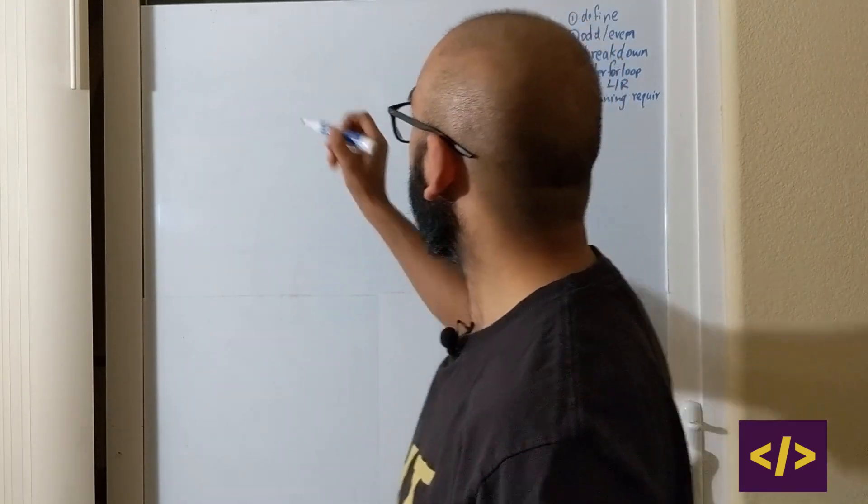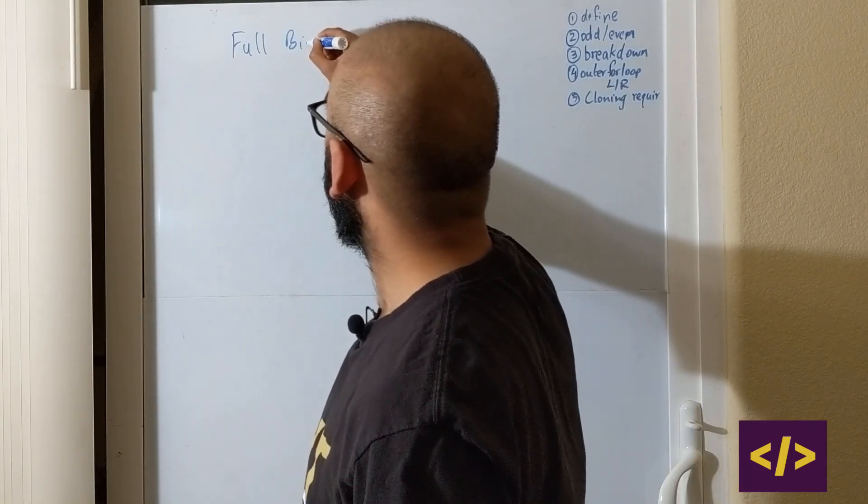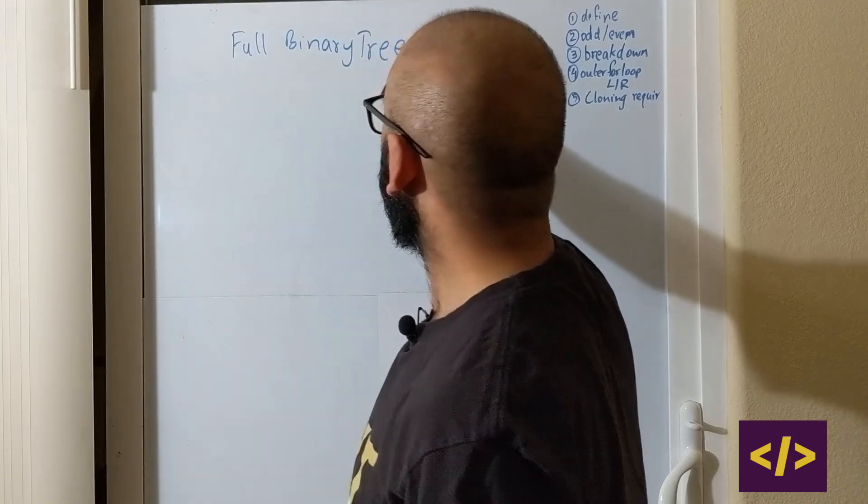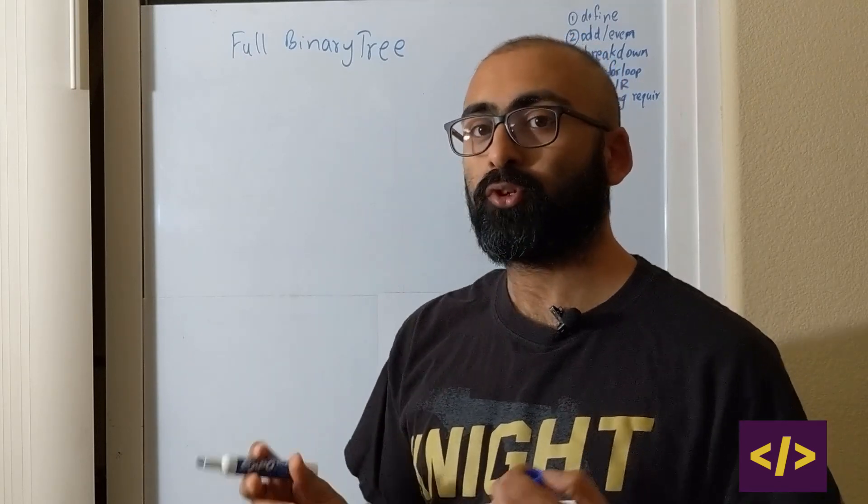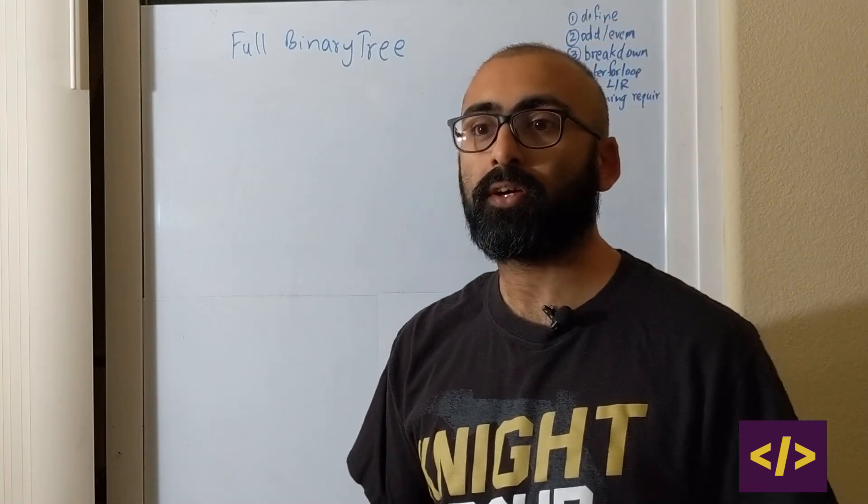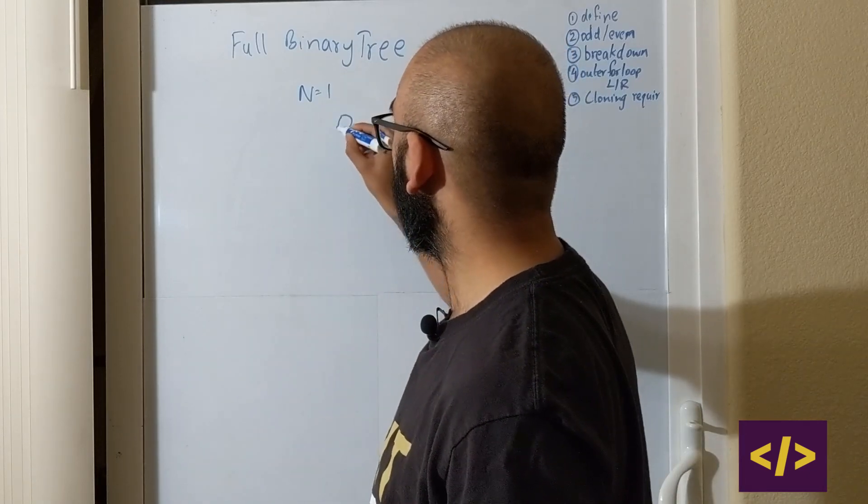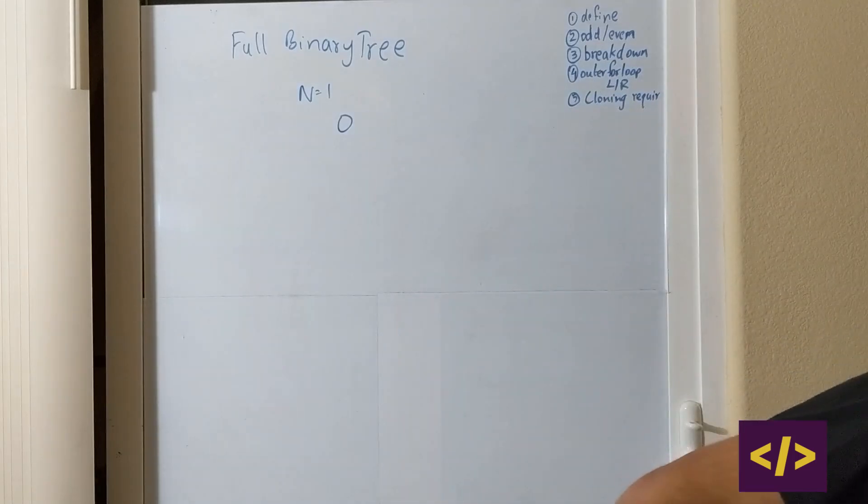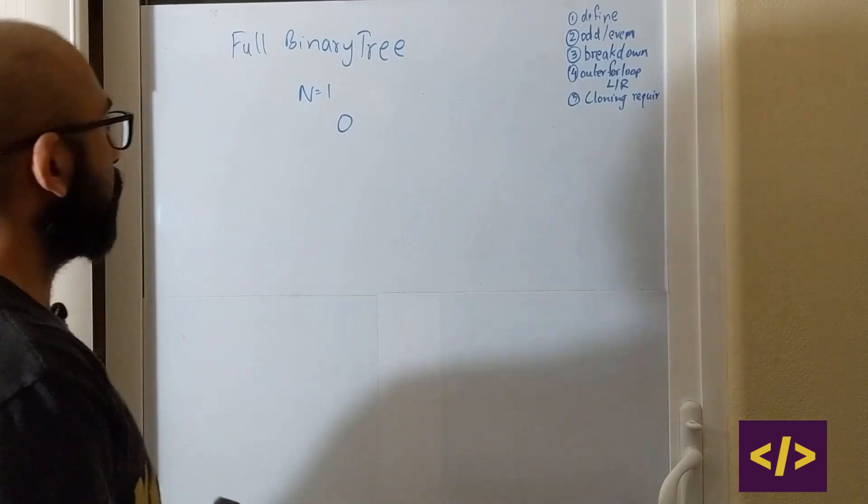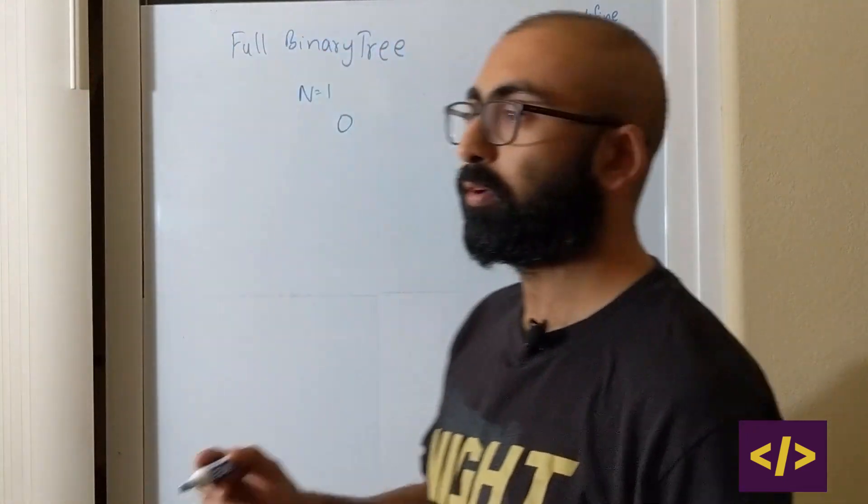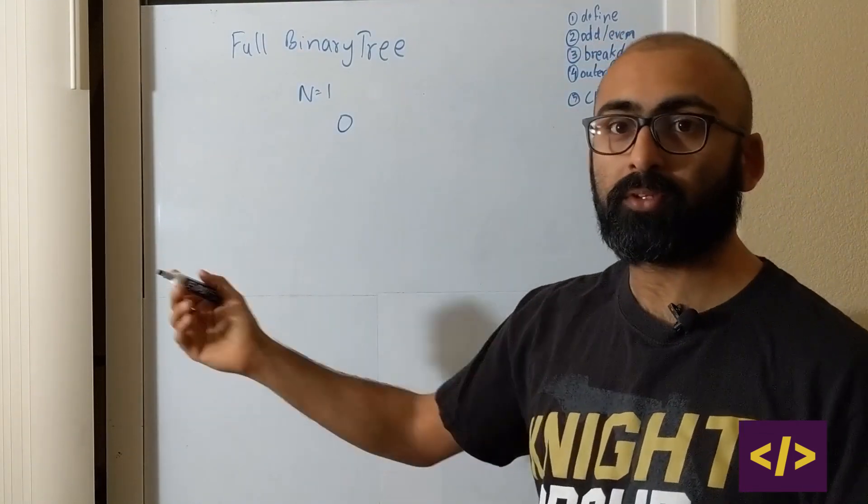The problem we're going to do today is called, given the number n, let's say from n equals 1 to whatever, you have to return all of the trees which are full binary trees. Now how do you define a full binary tree? A definition of a binary tree is if you have a node, that node should either have two children, a left and a right, or it should not have any children at all. So that's the definition of a full binary tree. So if you're given the value n equals 1, which means there's just one node, the only solution would be to have a node like that.